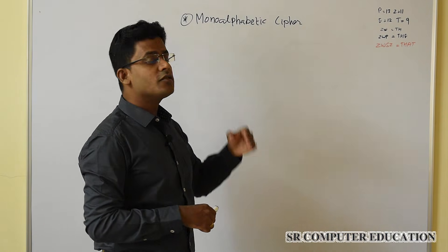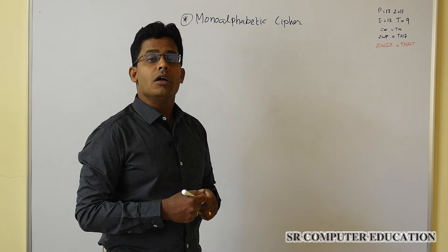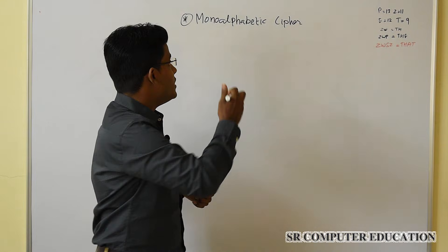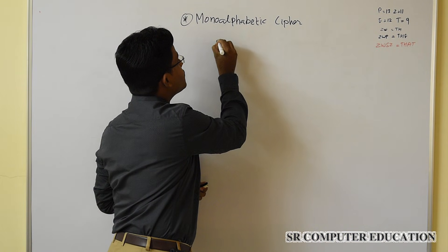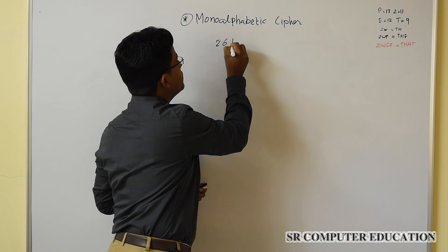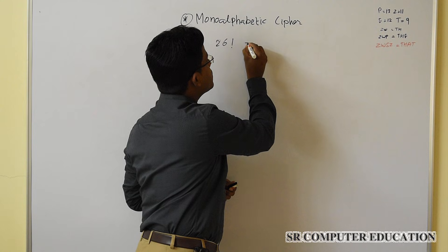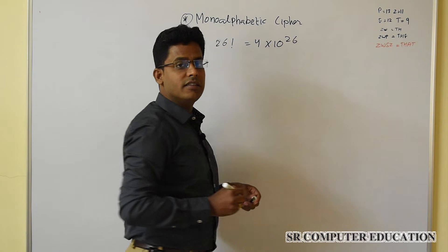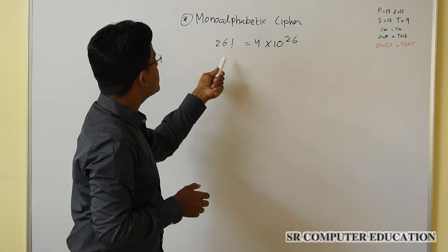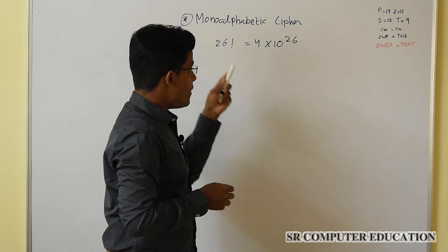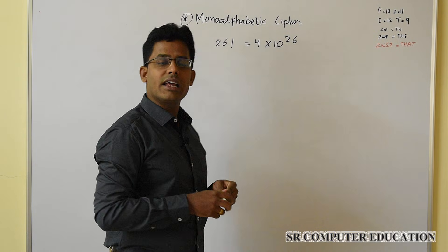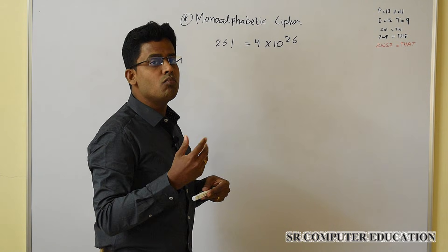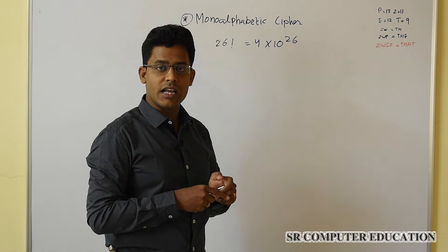In mono-alphabetic cipher, the possible key space is very large — that is 26 factorial, which comes up to 4 multiplied by 10 raised to 26. To break this cipher using brute force attack, it is a little bit difficult and will consume more time as compared to Caesar cipher.